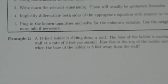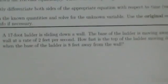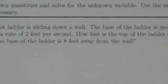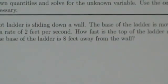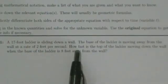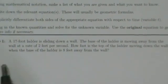With a related rates problem, the first thing you should always do is read the whole problem. Example 1: a 17-foot ladder is sliding down a wall; the base of the ladder is moving away from the wall at a rate of 2 feet per second. We want to know how fast is the top of the ladder moving down the wall when the base of the ladder is 8 feet away from the wall.